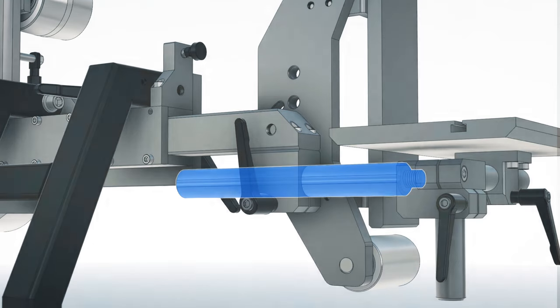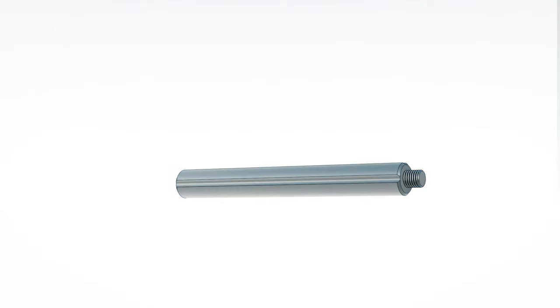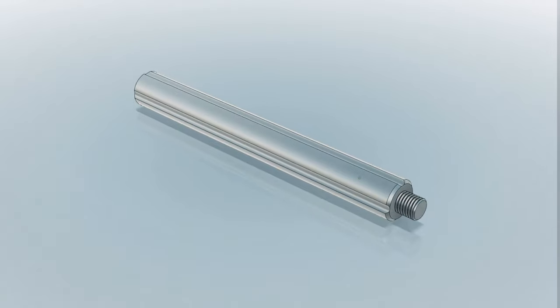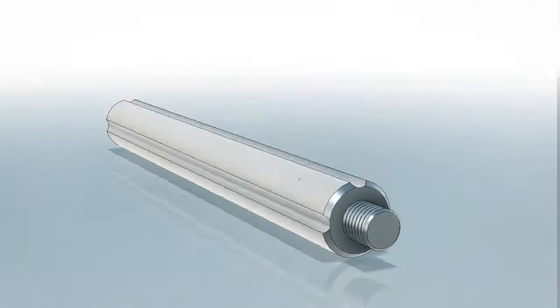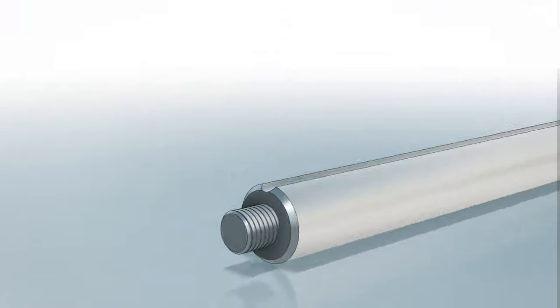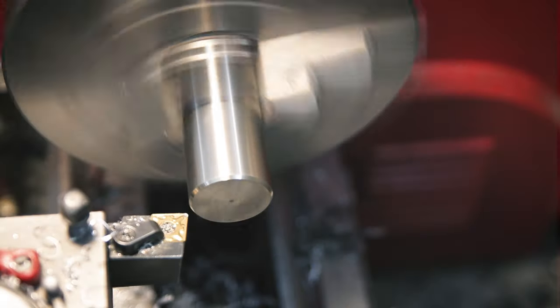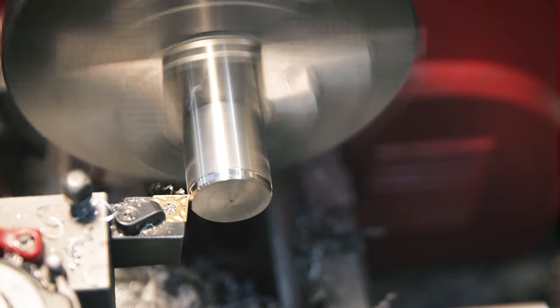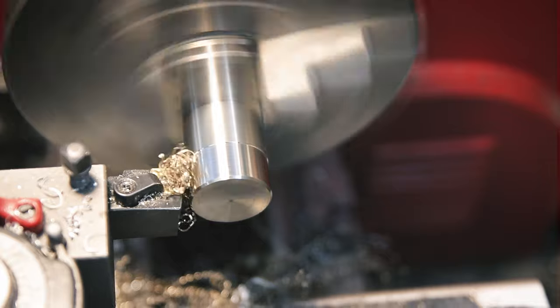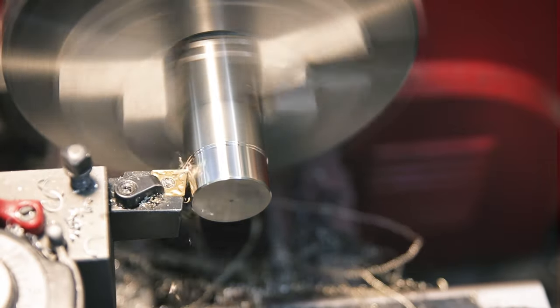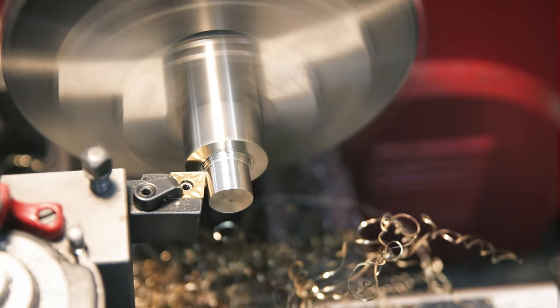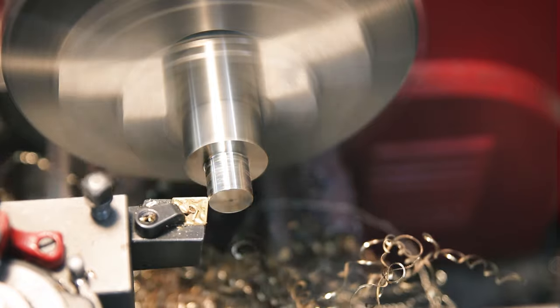This one is even thicker than the other ones because it needs to carry a bit more weight—30mm solid stainless steel. I chose stainless for all of these because they will be sliding in and out of these clamps a lot, and stainless has a very hard surface. But the downside of that is that it's kind of tricky to machine.